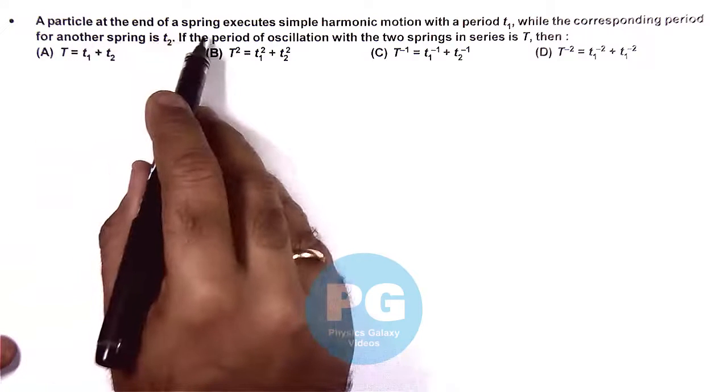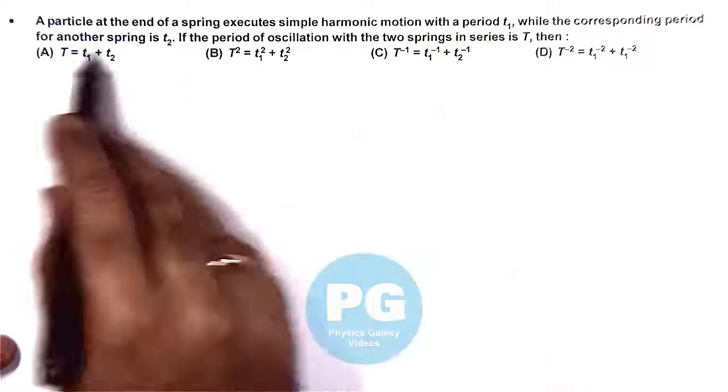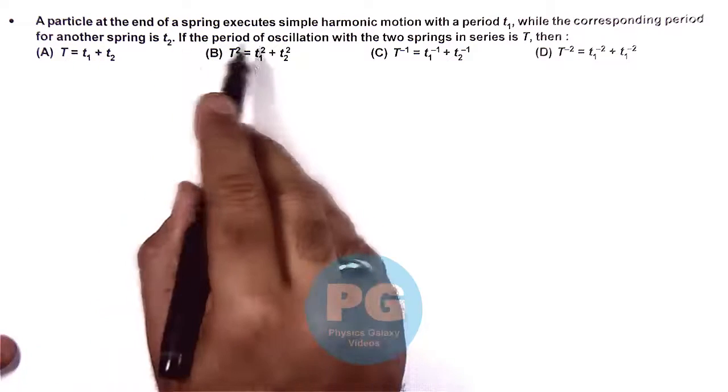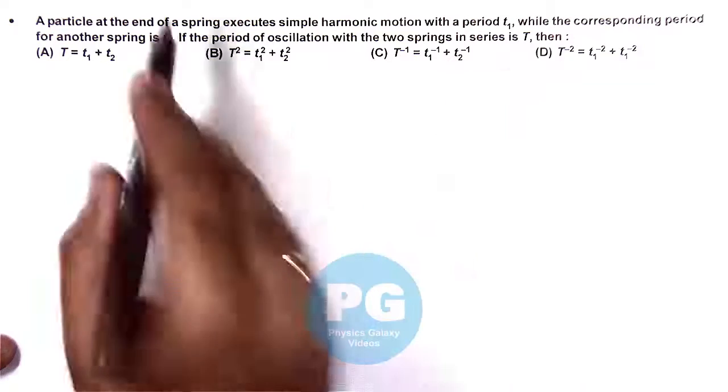In this question, we are given that a particle at the end of a spring executes simple harmonic motion with time period T1, while the corresponding period for another spring is T2. The period of oscillation with the two springs in series is T, and we need to relate these.